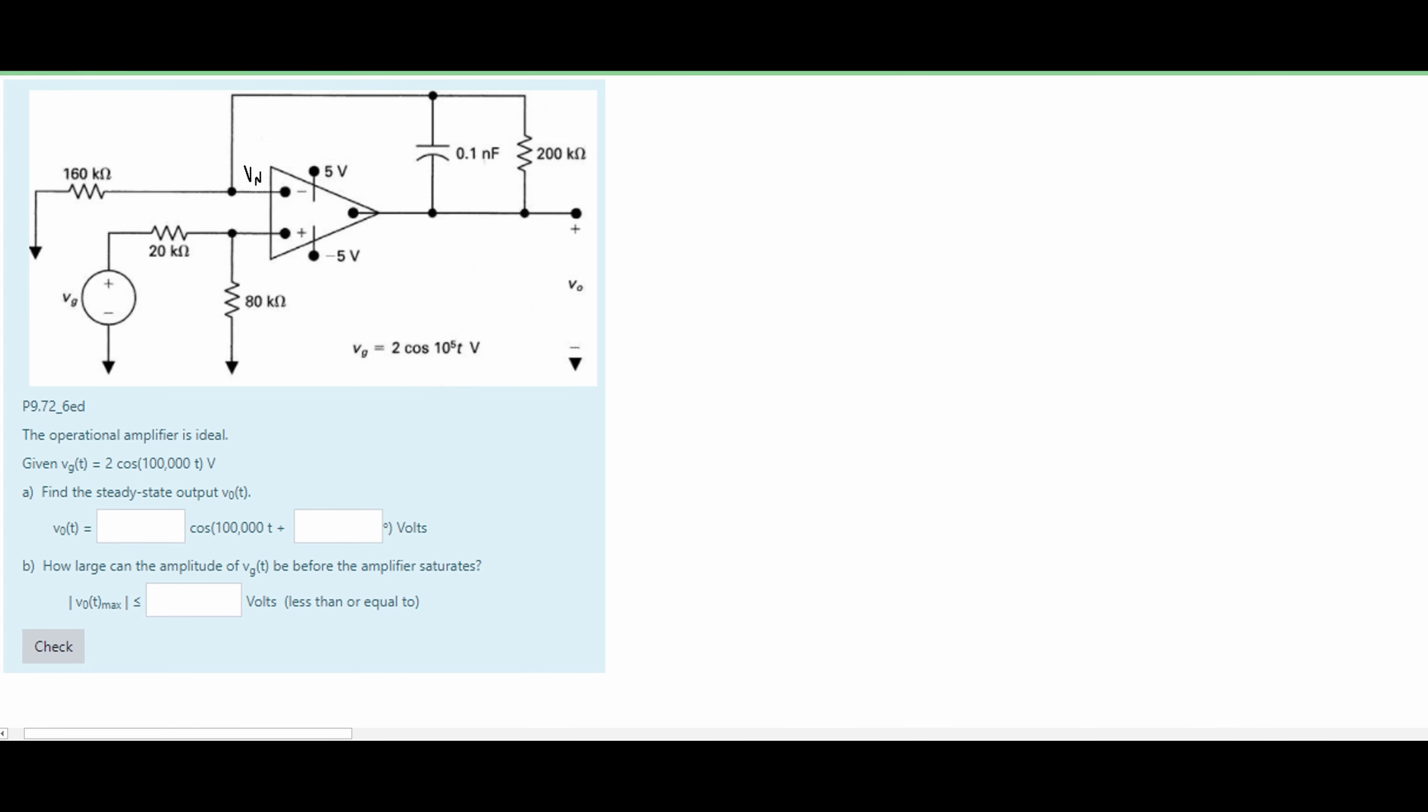We are going to use this VN and this VP. The VN is for our negative and the VP is for our positive terminals. We know that our VN is equal to VP and this is going to help us when we write our problem out.